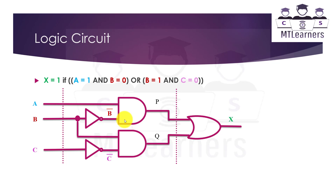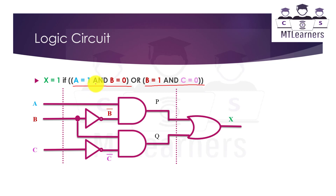Now we will create the logic circuit from this logical statement with three inputs A, B, and C placed on the left side and output X on the right side. Starting from the inner parenthesis: A equals to 1 goes straight into an AND gate. B equals to 0 means the value of B must be inverted using a NOT gate, placed before the AND gate. We join A and B-inverse with the AND gate to get intermediate output P.